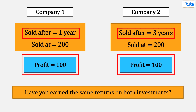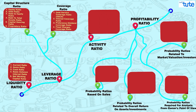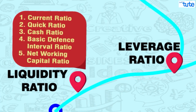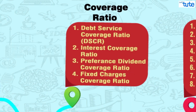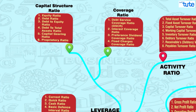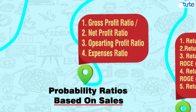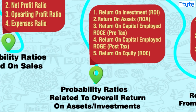And that is what we are going to discuss in today's session. So friends, after learning how to calculate and analyze various accounting and financial ratios like liquidity ratios, leverage ratios covering capital structure and coverage ratios, activity ratios and profitability ratios based on sales, today we are going to understand the second type of profitability ratios that are related to overall return on assets or investments.